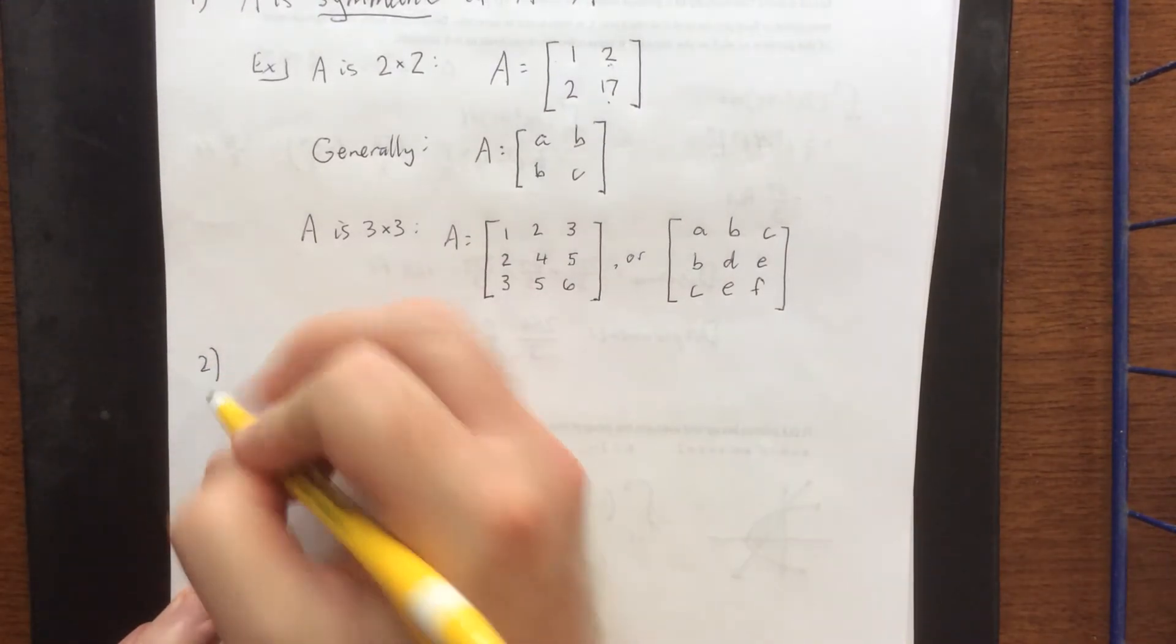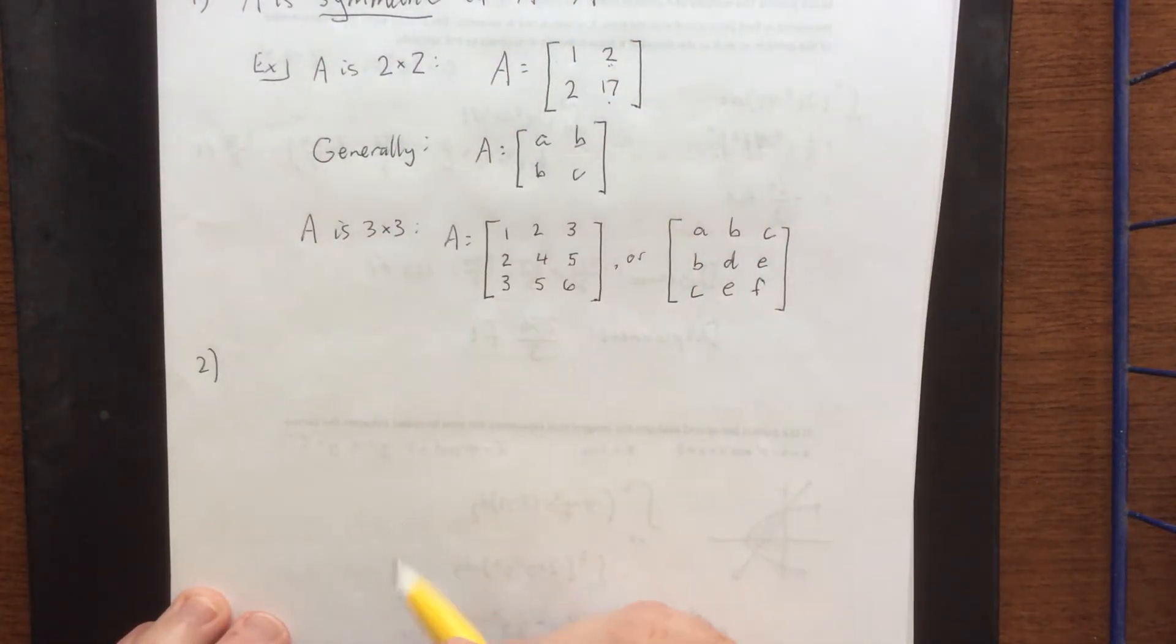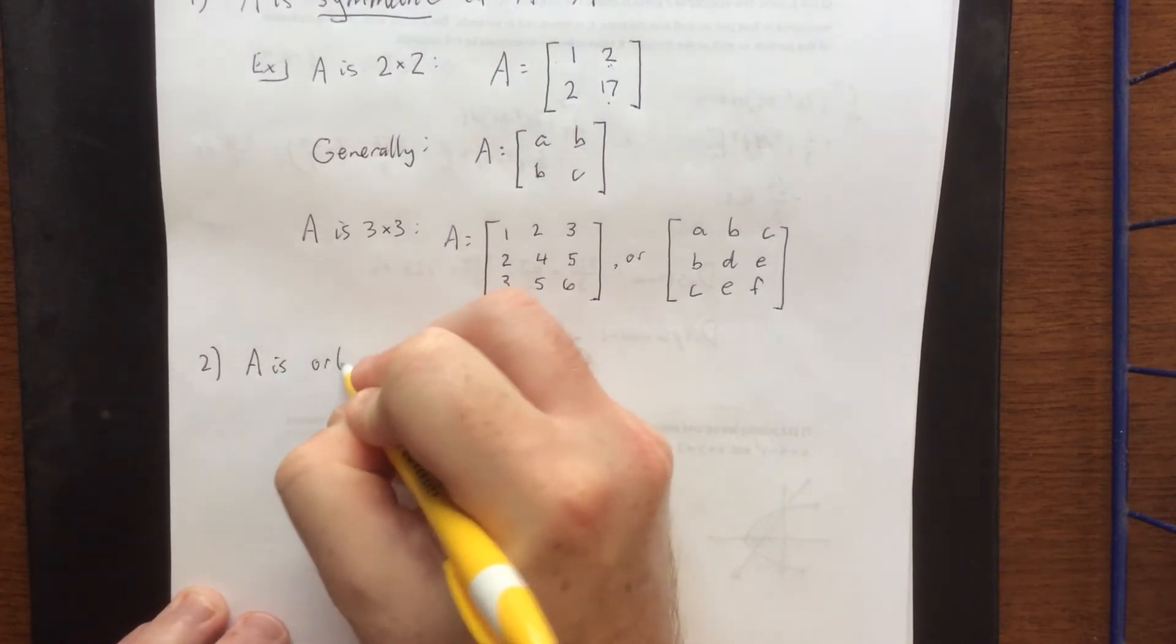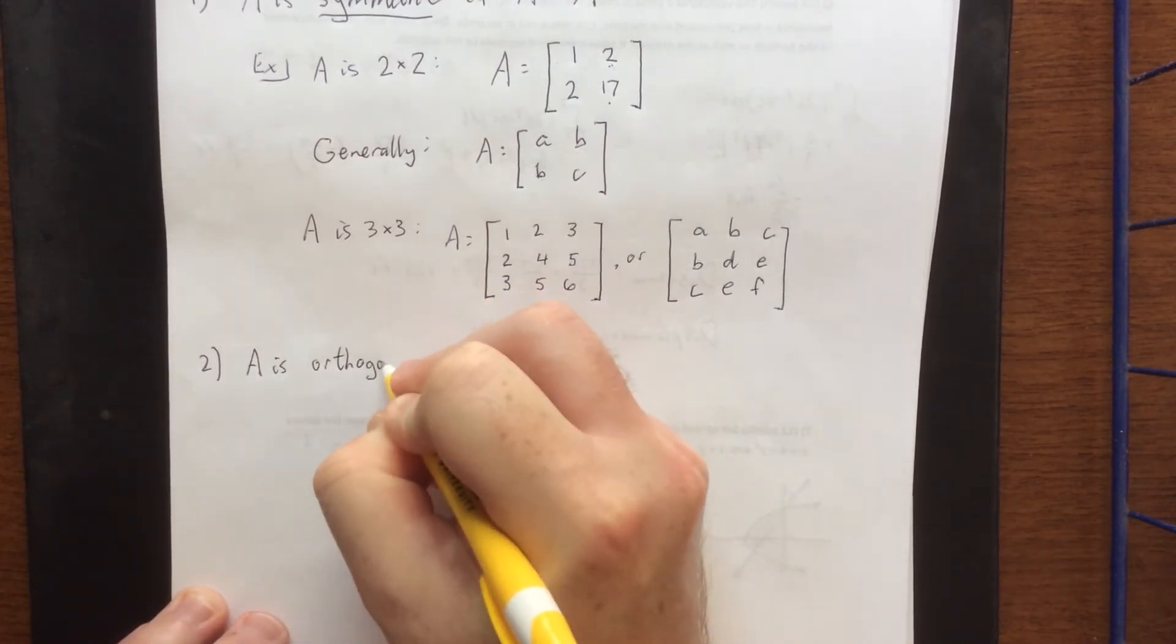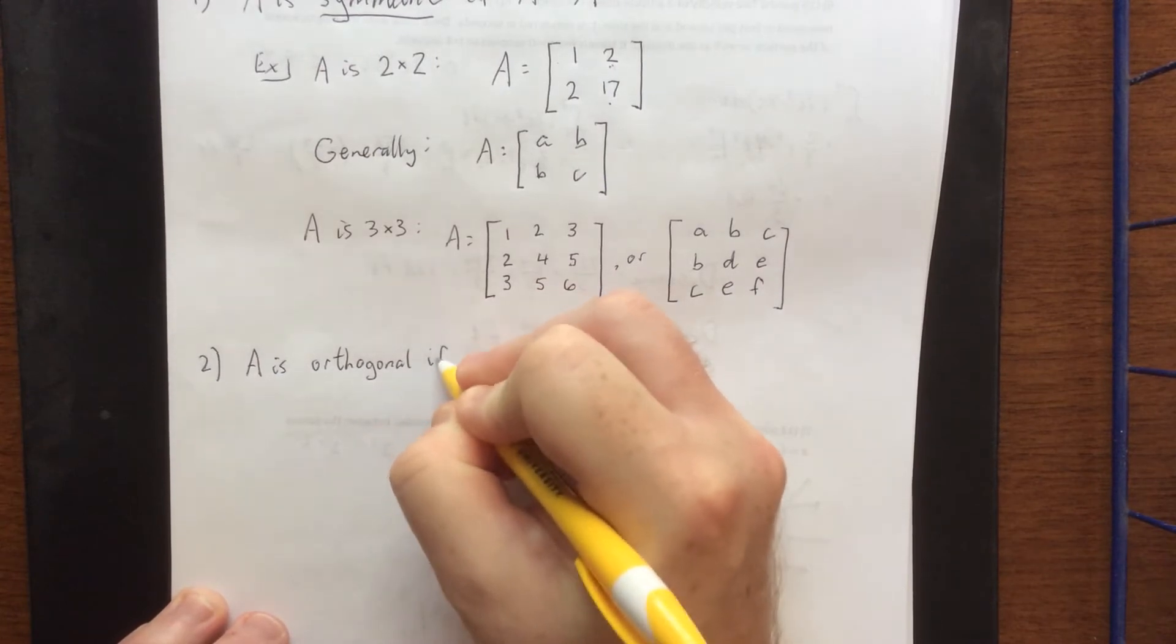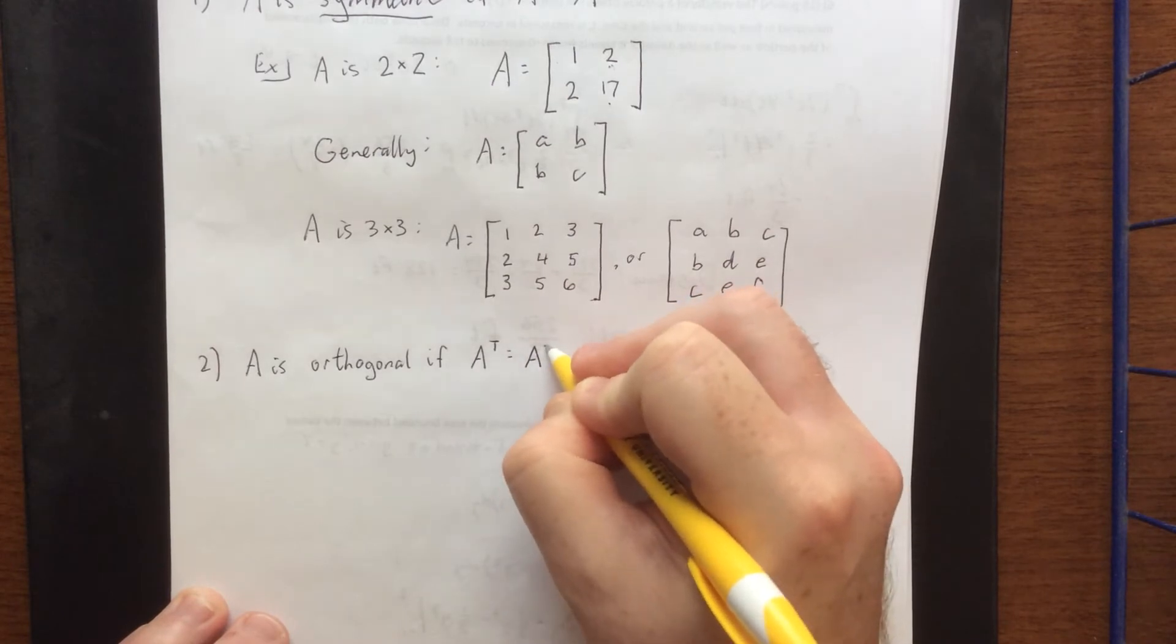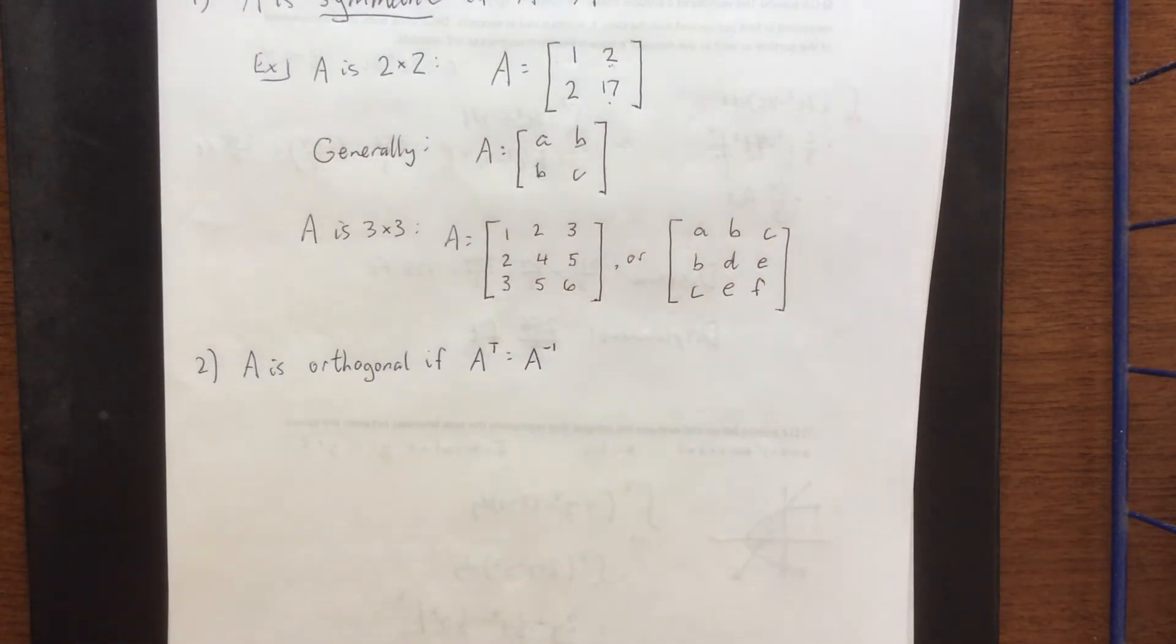Next definition, and this is completely independent of the previous definition. A is orthogonal if the transpose of the matrix is actually equal to the inverse of a matrix. Now there are very specific cases that are going to make a matrix orthogonal, and I wanted to talk about one of those while we're here.